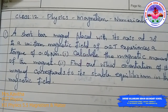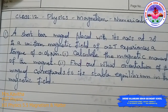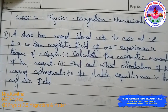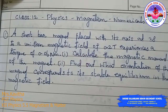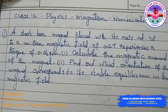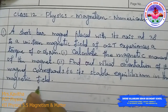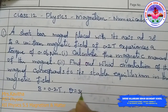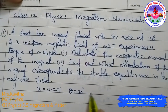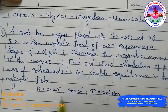First problem: a short bar magnet is placed with its axis at 30 degrees to a uniform magnetic field of 0.2 tesla. It experiences a torque of 0.06 newton meter. We are given B = 0.2 tesla, theta = 30 degrees, and torque tau = 0.06 newton meter.